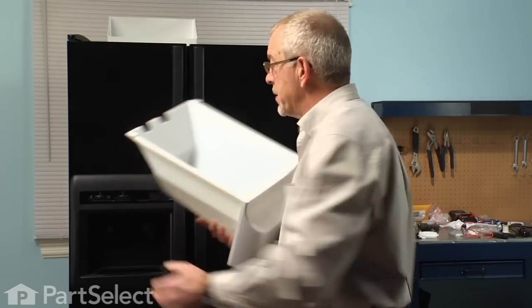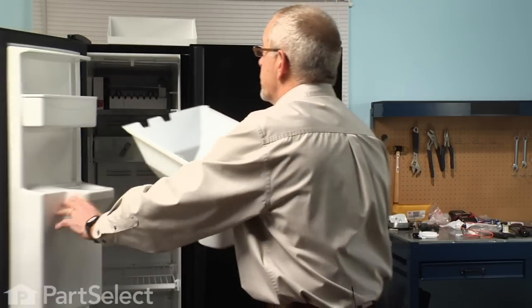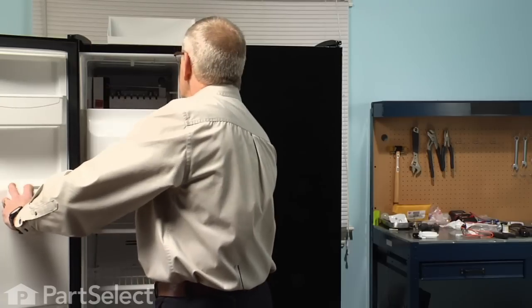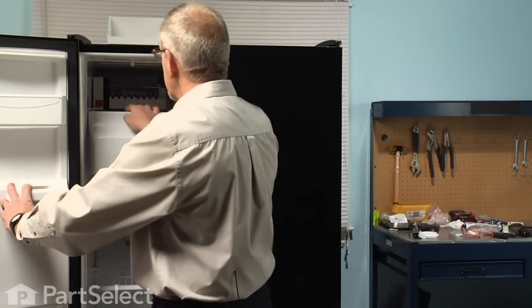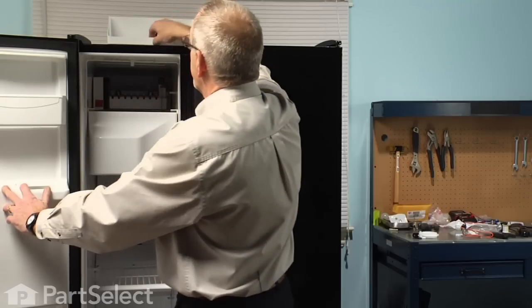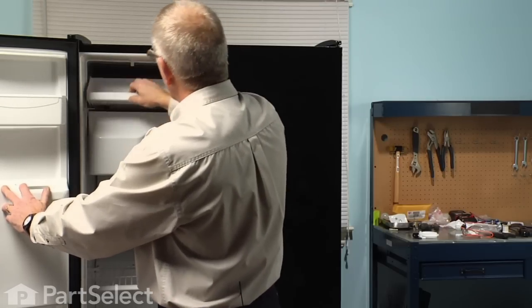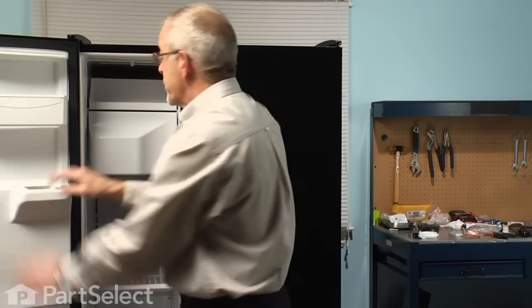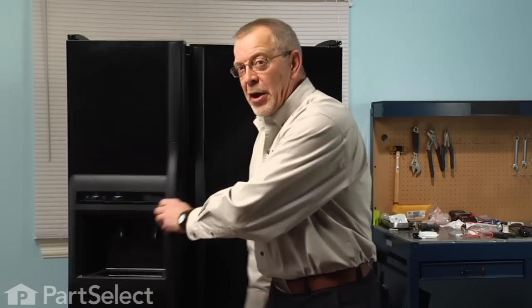To reinstall the ice bin, we'll open the freezer door, align it in the track, and slide it all the way back until it locks in place. We'll reach in and turn the ice maker back on, slide the front tray in, and our repair is complete.